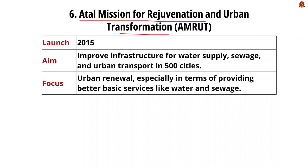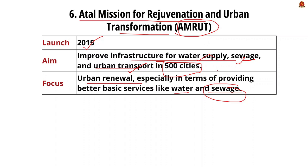The next initiative is AMRUT — Atal Mission for Rejuvenation and Urban Transformation — launched in 2015. It aims to improve infrastructure for water supply, sewage, and urban transport across 500 cities. Unlike Jal Jeevan Mission which focused on piped water supply in rural areas, AMRUT focuses on water supply, sewage management, and urban transport in urban areas, improving basic urban services.